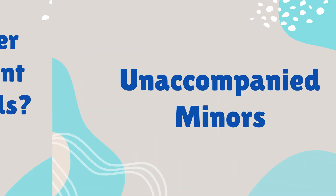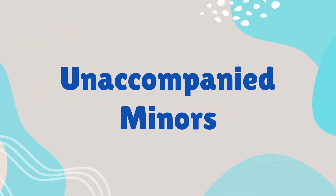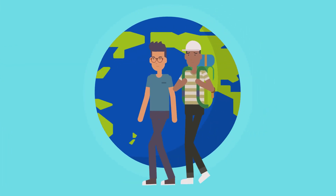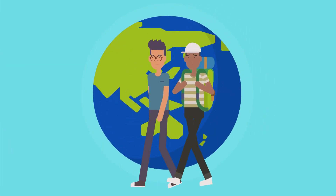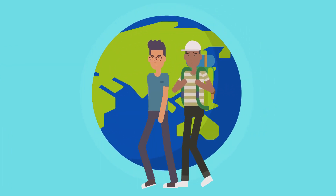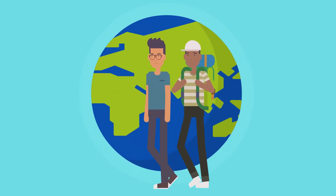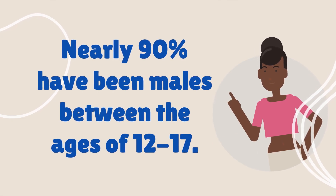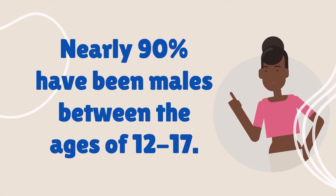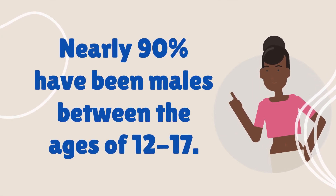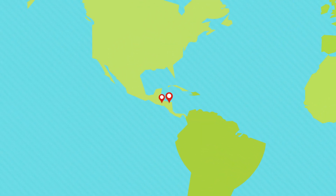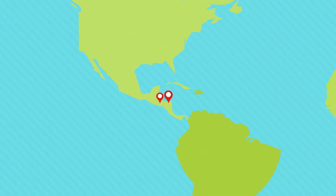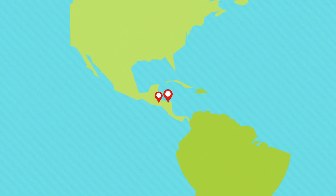The number of unaccompanied minors trying to cross into the U.S. without proper documentation has increased sharply in recent years. Nearly 90 percent have been males between the ages of 12 to 17, and most are pushed out of Honduras and El Salvador because of increased gang violence.